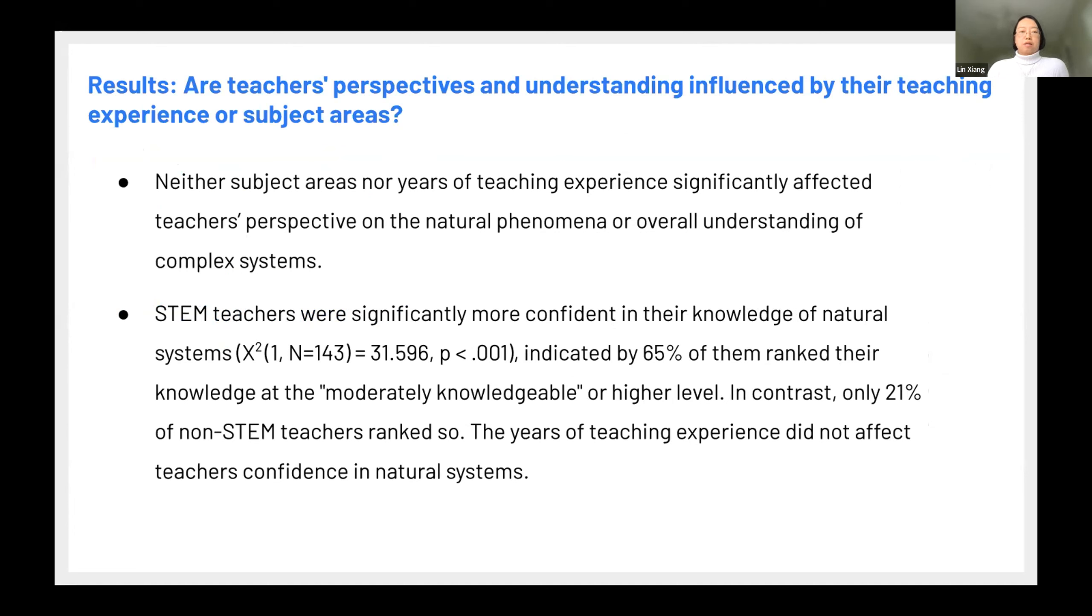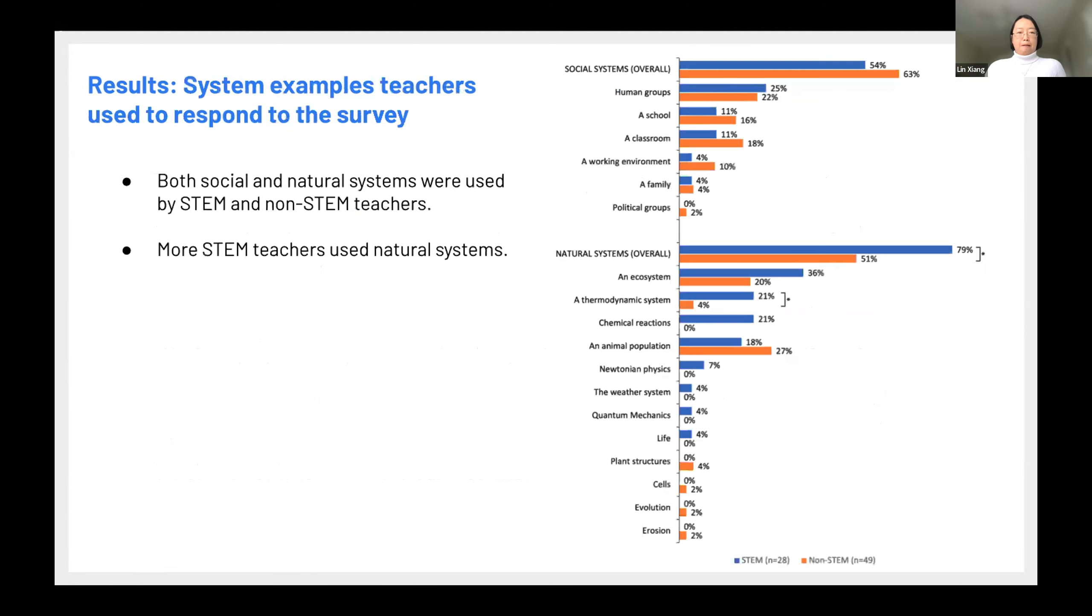And the last one, we find out neither the subject area nor year of teaching influence teachers' knowledge or perspective. We also find STEM teachers, they are sort of more confident about their knowledge than the non-STEM teachers. And when we look into the examples teachers use to respond to the survey, because we ask them to provide examples, we find out that both social and natural system were used by the STEM and non-STEM teachers. And that's very interesting. But we do find out that more STEM teachers, they use natural phenomena, natural system than the non-STEM teachers.